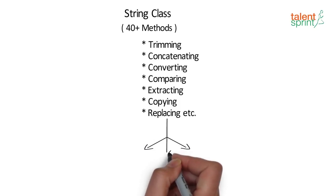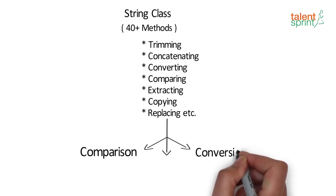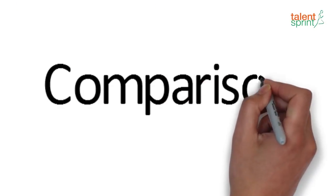Now there are three broad categories we can classify all these methods into. Comparison, conversion and search and text processing. Let's take a look at some of the methods in these categories one by one.